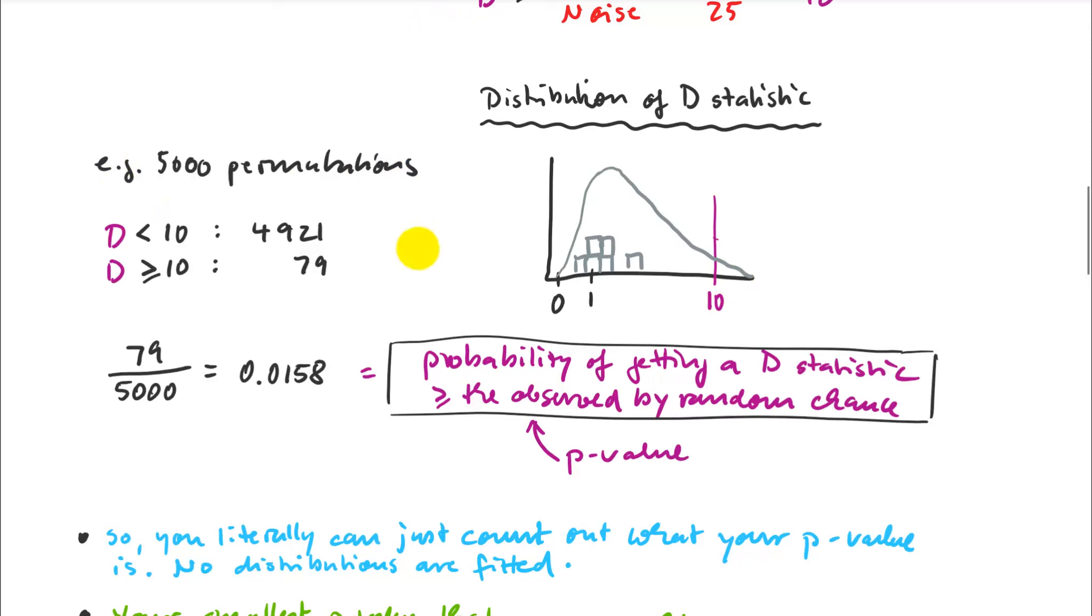That's equivalent to an F distribution, except it's really made from the particular data that you have. Perhaps I have 4921 values below my 10 that I observed and 79 above. That would give me a p-value of 0.0158 - 79 out of 5000 permutations is the probability of getting a D statistic larger than the observed one just by random chance.